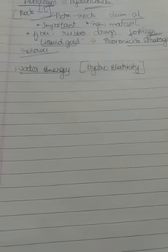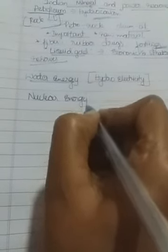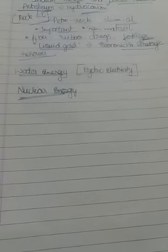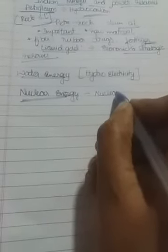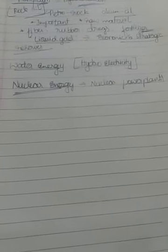These hydro electric power plants produce electrical energy. Next is another non-conventional resource: nuclear energy. Nuclear energy is the energy produced by nuclear fission or fusion. The place where nuclear energy is produced is called a nuclear power plant. The energy generated from atomic minerals through nuclear fission or fusion is called nuclear power.